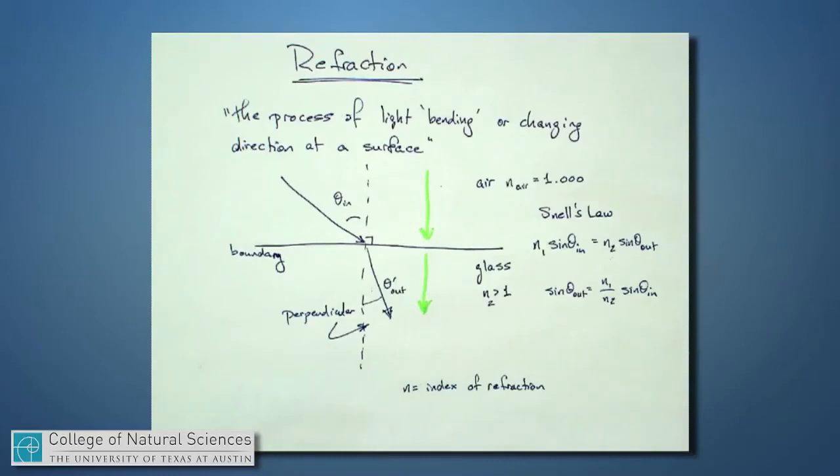If the angle incident is zero degrees, then the sine of that angle is zero degrees, and so zero has to equal zero, and sine of theta out has to equal zero. So this effect, this bending of light, really only takes place for angles of light that are away from the perpendicular, and Snell's Law quantifies that for us.